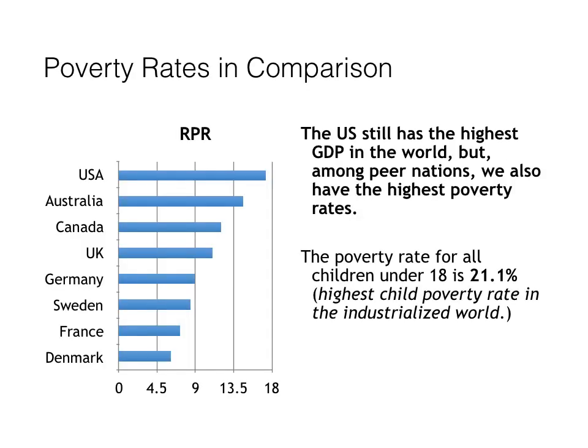The United States is still the wealthiest country on earth, as measured by GDP, or gross domestic product — a measure of a nation's entire economic output. We're still in first place according to the World Bank. China is in second place, followed by Japan and Germany. But among peer nations — industrialized wealthy nations — we also have some of the highest poverty rates, and the highest child poverty rate in the industrialized world, at 21.1%. Why are we the richest country on earth, but also one of the poorest, at least insofar as family inequality is concerned?